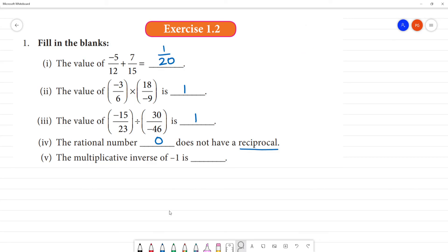Next, the multiplicative inverse of minus 1. What is multiplicative inverse? Multiplicative inverse is reciprocal number. Minus 1 is minus 1 by 1. What is reciprocal? 1 by minus 1. What is 1 by minus 1? Again, minus 1. Minus 1 is now. This is reciprocal.